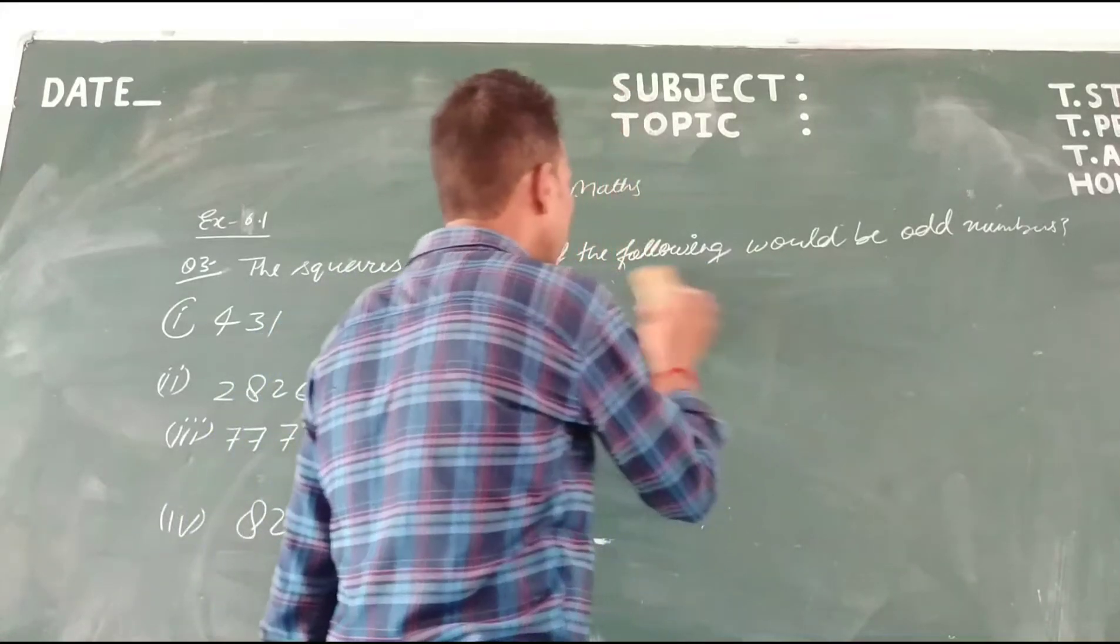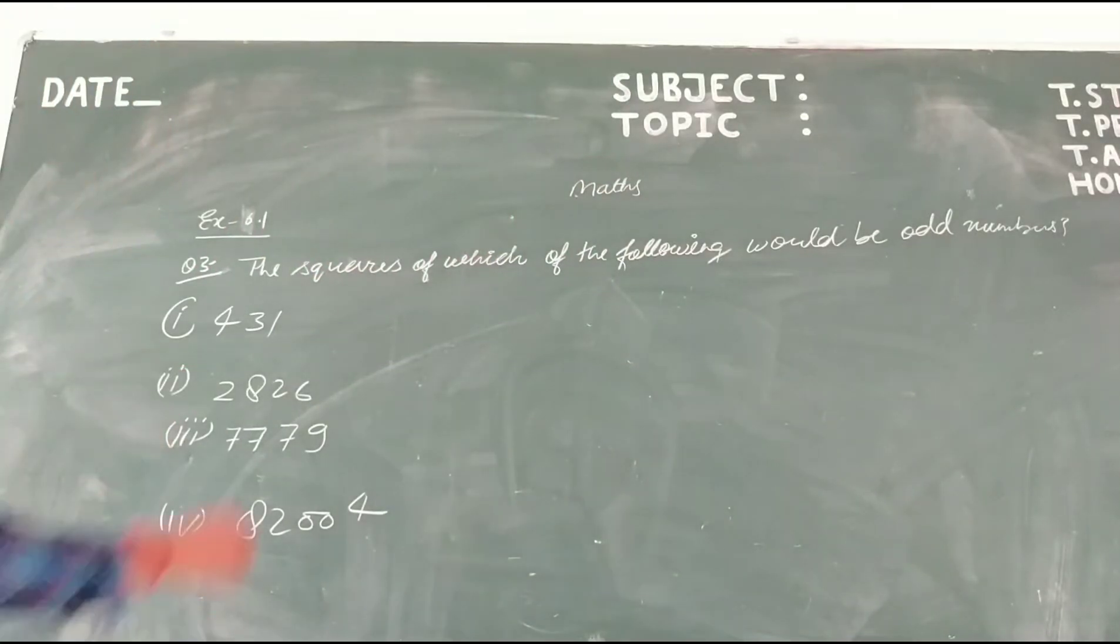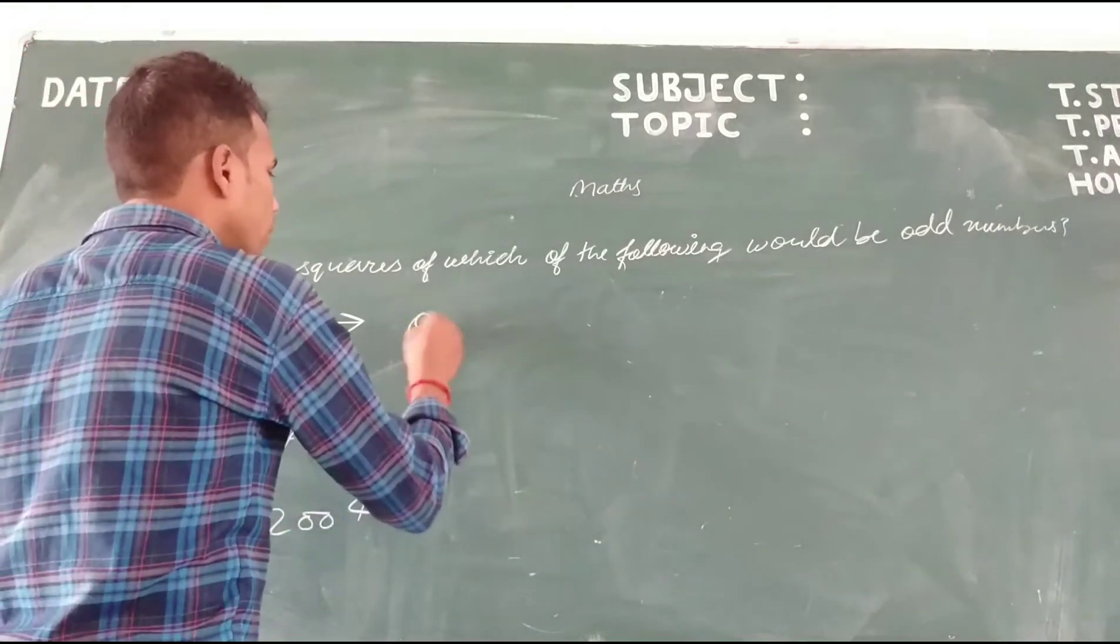Now you can find out without squaring. The square of 431: 431 is an odd number.